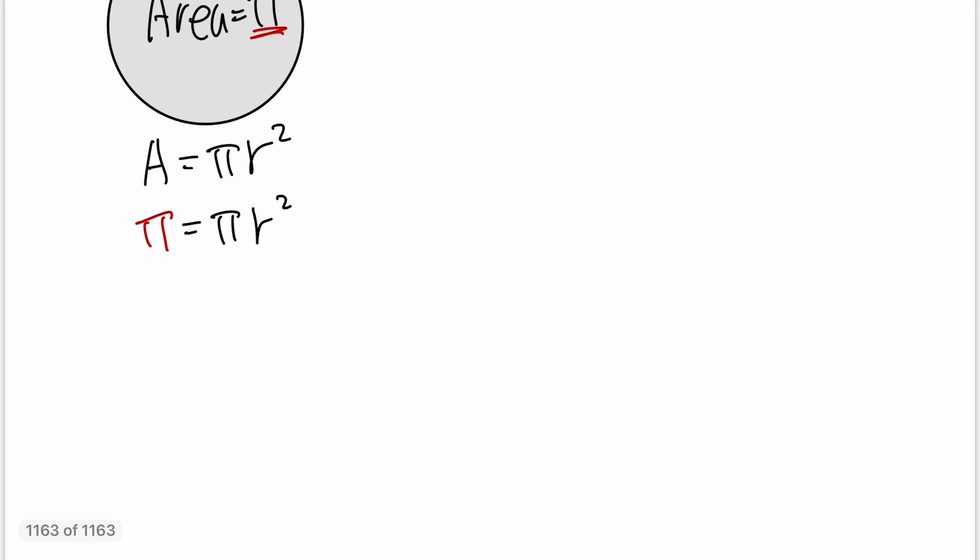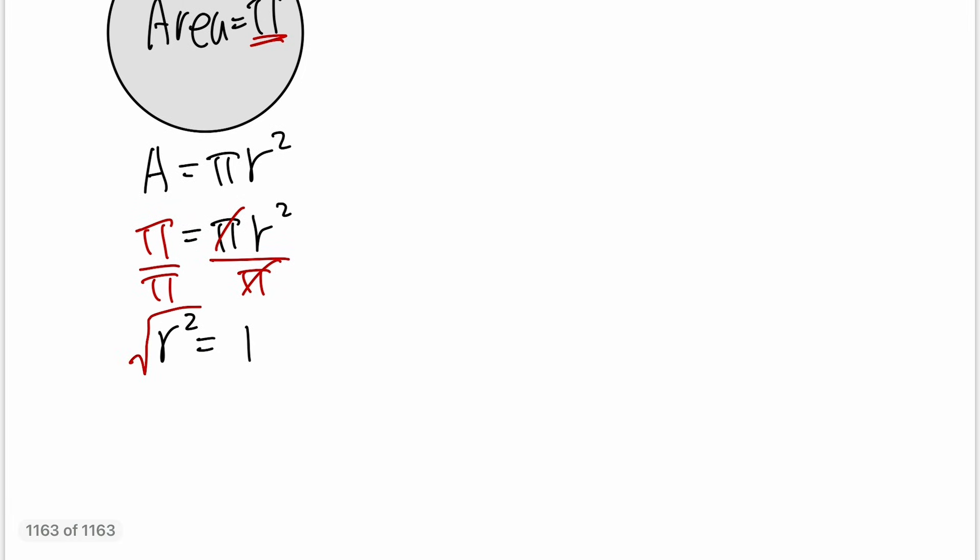Well, first remember that area of a circle is equal to πr². And right now we want the area to be π, so we put the π right here. So π is equal to π times r². And then we can solve for r by dividing both sides by π first, so they cancel and we see r² will be equal to π over π which is just 1.